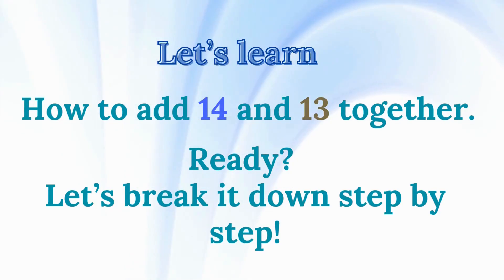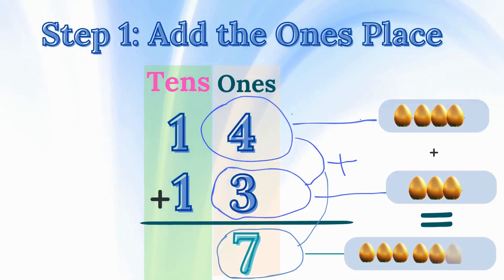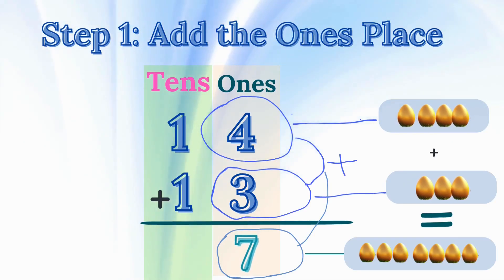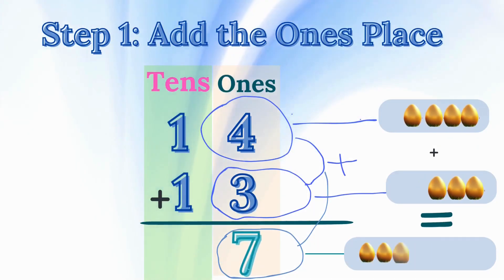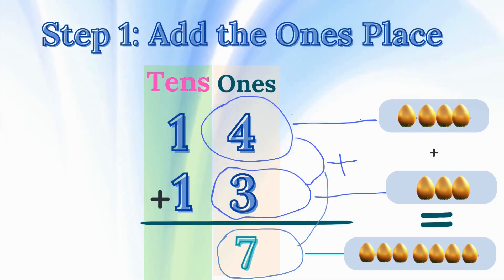Let's break it down step by step. Step 1: Add the 1s place. First, look at the 1s place. In 14, there's a 4 in the 1s place. In 13, there's a 3 in the 1s place. Now, let's add 4 plus 3. 4 plus 3 equals 7. So, we put 7 in the 1s place of our answer.